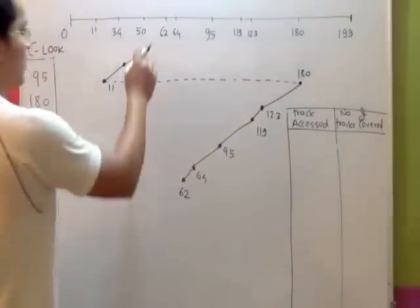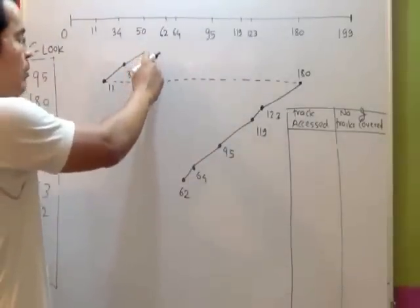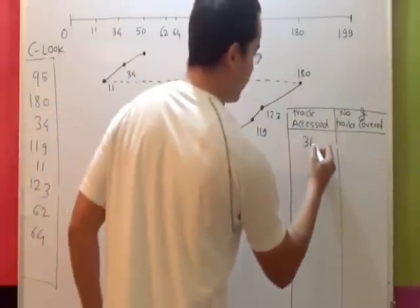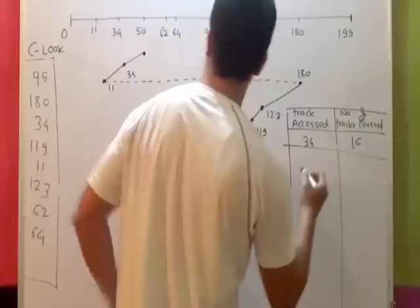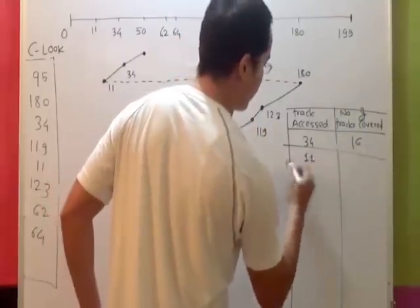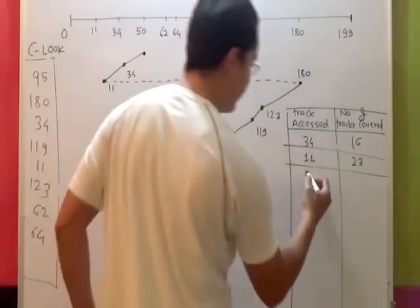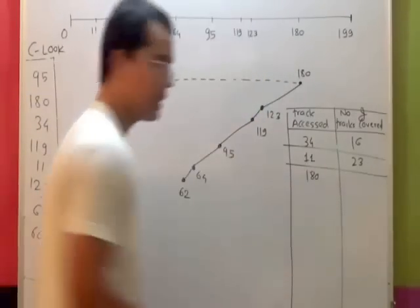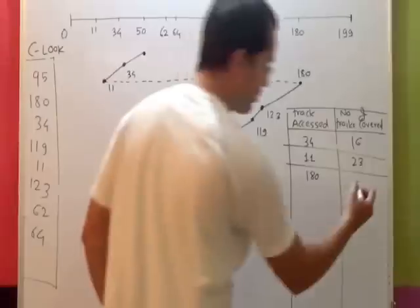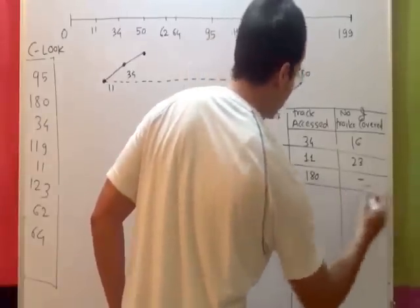Alright, first we accessed - from 50 was the initial head position, we went to 34. Number of tracks covered, 16. From 34 we went to 11, number of tracks covered 23. From 11 we went to 180, right? But as I said, we will not consider this in the head movement calculation.